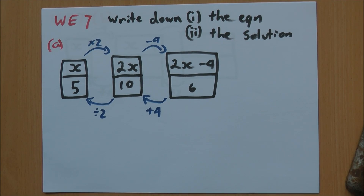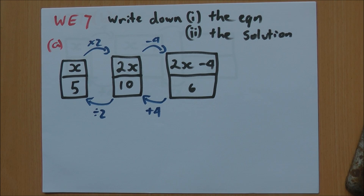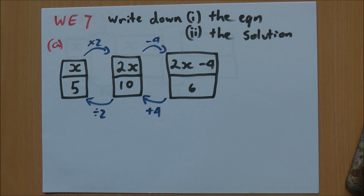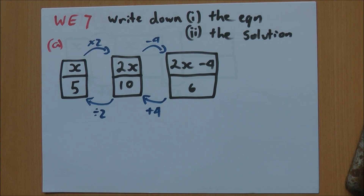Worked example 7. There are two parts to these questions: write down 1) the equation to be solved, and 2) the solution to the equation shown in each of the following flowcharts, completing the flowchart if necessary. So what we're working out is what is the equation we're dealing with and what is the value of our unknown, our variable, our x.